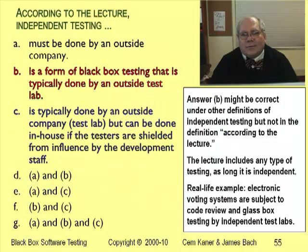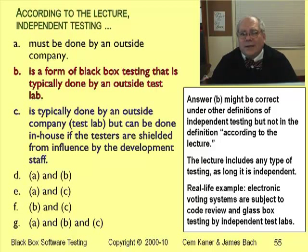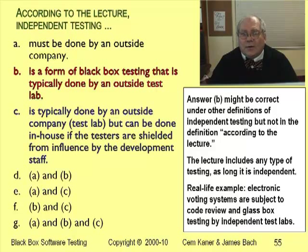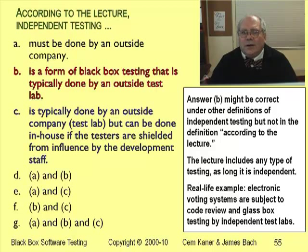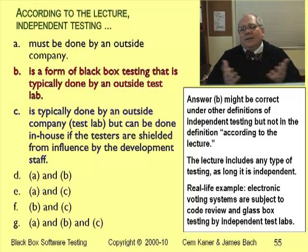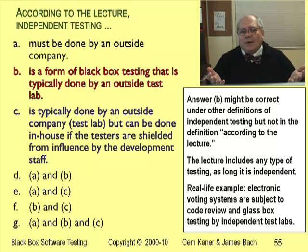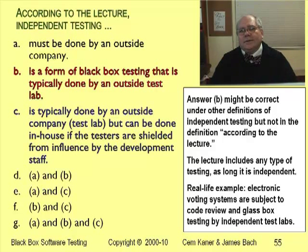Here's another example with the most common error, choice B, already highlighted. Many people would say that B is correct — that independent testing is a form of black box testing that's typically done by an outside test lab. However, the question starts by saying 'according to the lecture.' I just gave you an example of voting system testing with independent test labs doing glass box testing. So according to this lecture, independent testing might or might not be black box testing, and therefore according to this lecture, option B is incorrect.